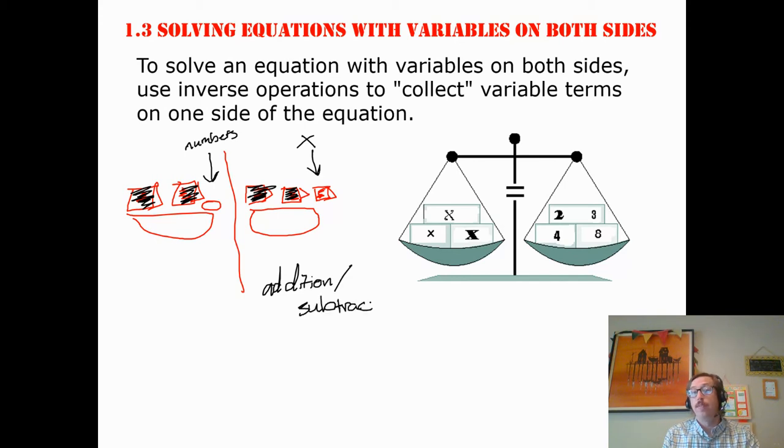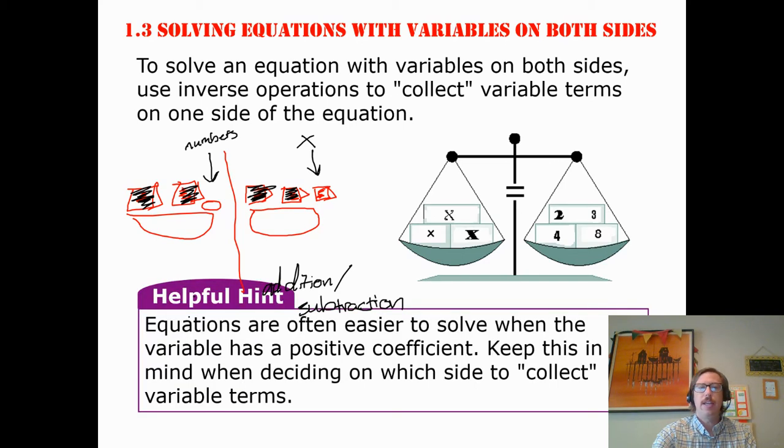Now, what we covered in class as well was the fact that it's sometimes easier to solve when the variable has a positive coefficient. Keep that in mind when you're deciding which side to collect, because x can end up on the right, x can end up on the left. And what you don't want is your x on both sides.